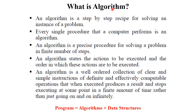What is meant by algorithm? Algorithm means a step-by-step recipe for solving an instance of a problem. Every single procedure that a computer performs is an algorithm. Algorithm simply means step-by-step instructions on how to solve a particular problem in a finite number of steps. Algorithm states the actions to be executed and the order in which these actions are executed. It is the sequential instructions that perform a particular action. Algorithm is a well-ordered collection of clear and simple instructions of definite and effectively computable operations. We execute each and every instruction that produces a result and stops executing at some point in a finite amount of time.